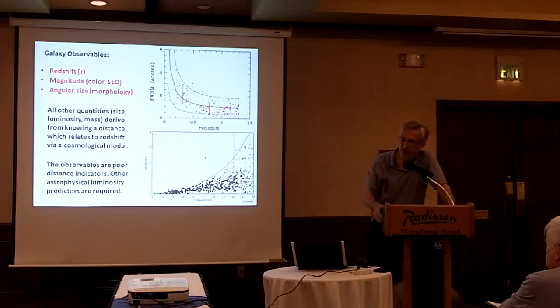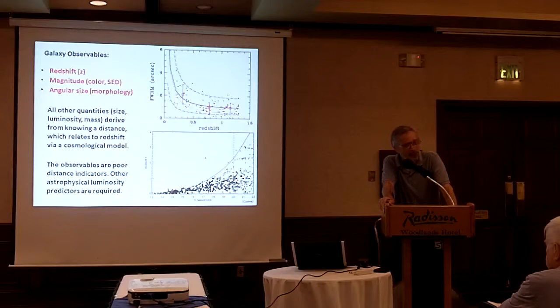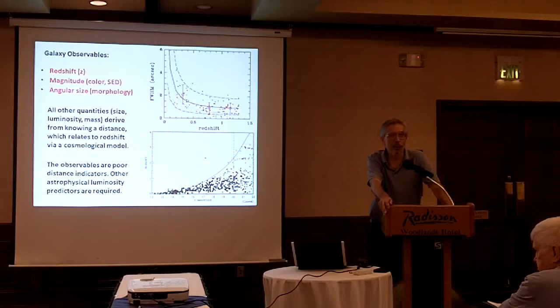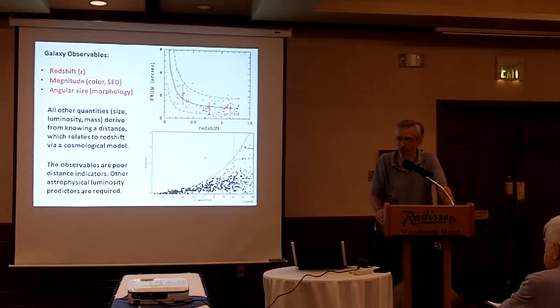These two graphs show that very simply: at a redshift of one, galaxies have an order of magnitude variation in angular size, and the luminosity function is broad, so they have several orders of magnitude of apparent brightness. So these are not good distance indicators. You have to find something with extra astrophysics to use them to create what we now call a Hubble diagram.